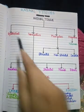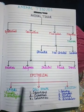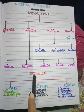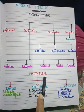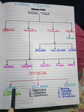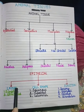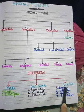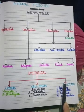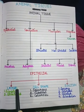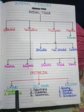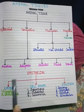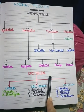First we will start with epithelial tissues. You can see in the flow chart I have made for epithelial tissues based on three criteria: types of layers, cell shape, and function. They are divided into three parts, the first one being simple epithelial tissue.